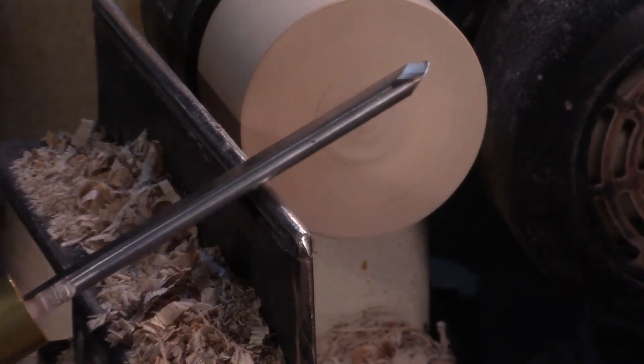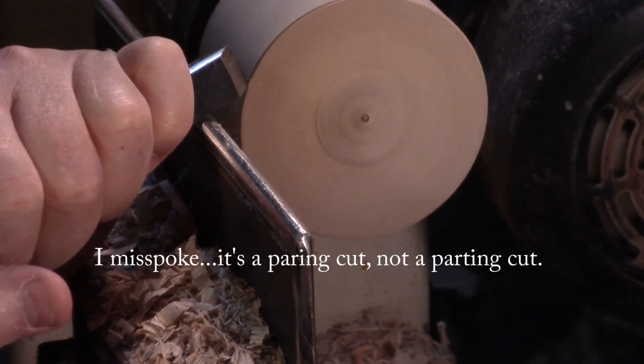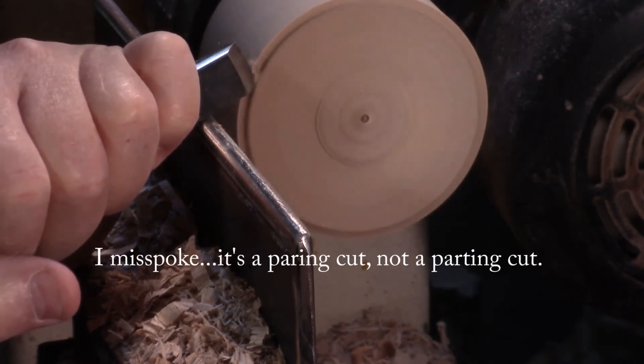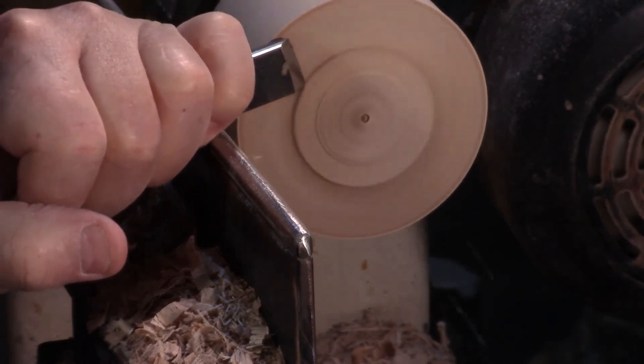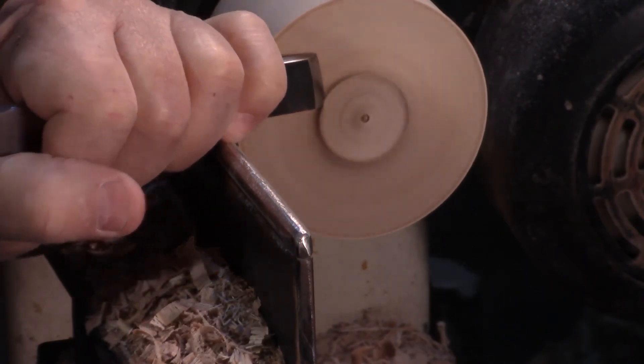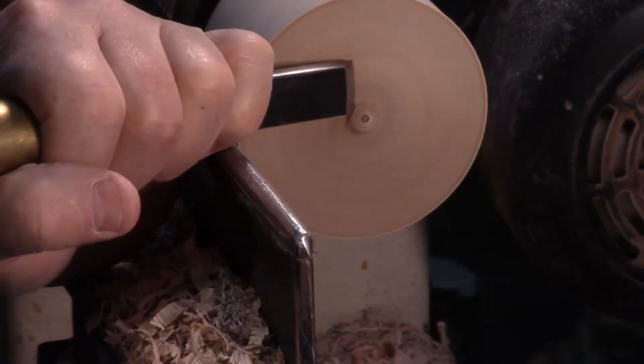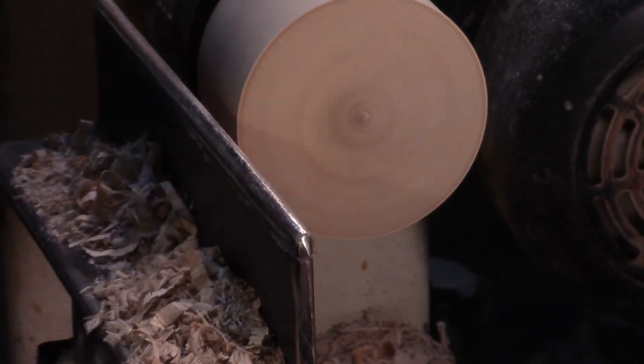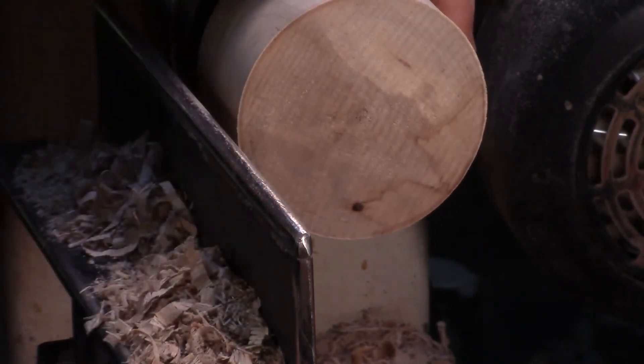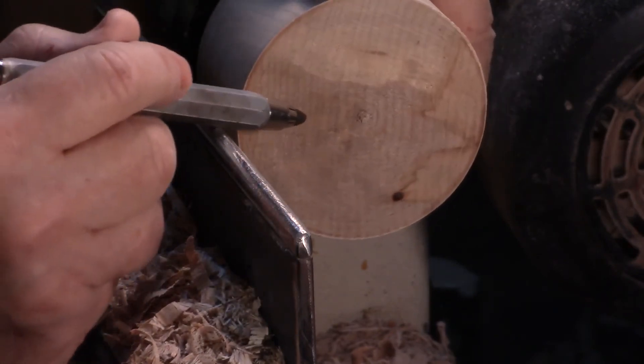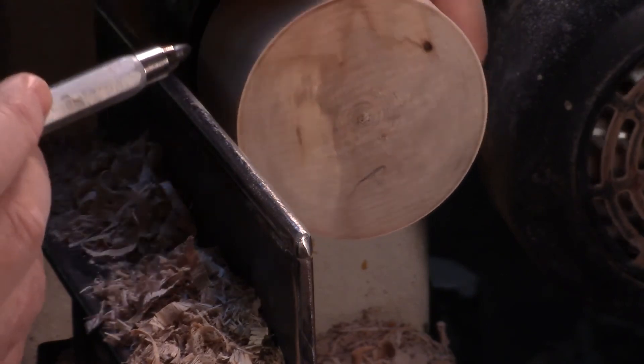And now I'm going to repeat the test with the paring cut using the skew chisel. When you make this paring cut, you can't take off very much material at all. It will just bog down and you won't be able to push the tool through it. But when you start it off with just a very, very slight cut, it does a really good job. Let's take a look at the surface here. Once again, that's about as good as we're going to get. There's only a very tiny bit of torn grain.